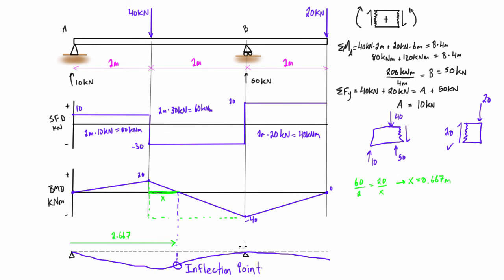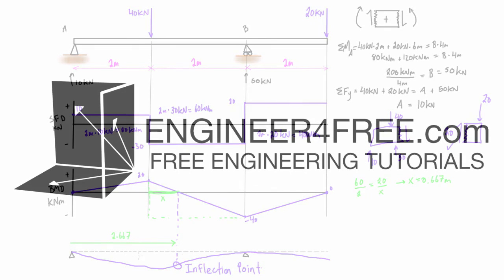So you can see the deflected shape very roughly follows the inverse of the bending moment diagram when positive bending is drawn above the axis. If you draw positive bending moment below the axis, your bending moment diagram itself serves as a rough guide to the deflected shape. Thanks for watching, and remember: where a bending moment diagram crosses the axis, that is an inflection point on the deflected shape.